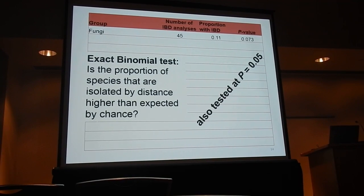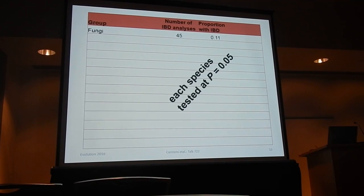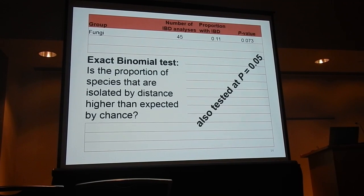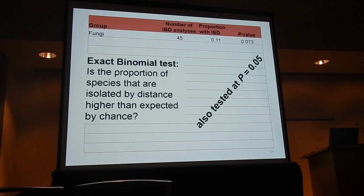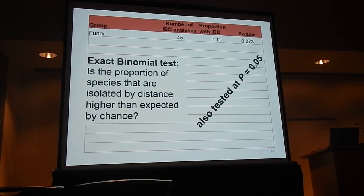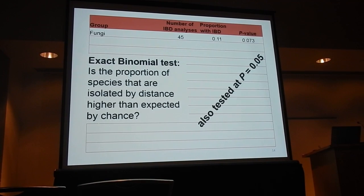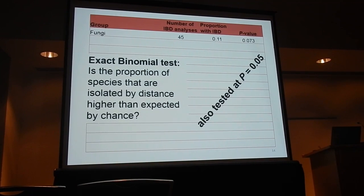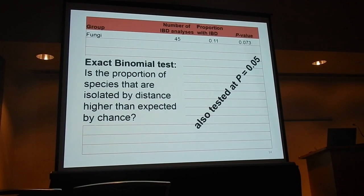Because Bonferroni is going to roll over in his grave if I do 18,000 analyses without addressing multiple comparisons, what we did is an exact binomial test to ask whether the proportion of species found to be isolated by distance is greater than we would expect by chance — based on a binomial distribution tested at p = 0.05. This allows us to interpret our results in a way that accounts for the number of comparisons without just dividing 0.05 by 18,000 and being unable to say anything.